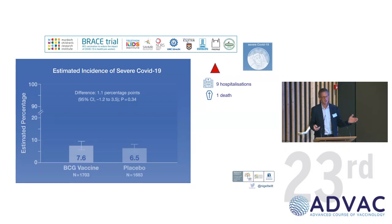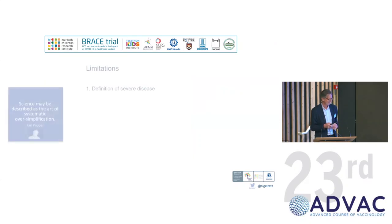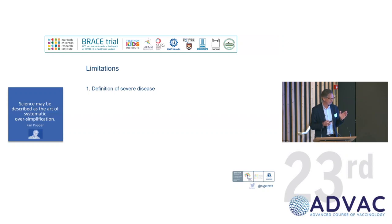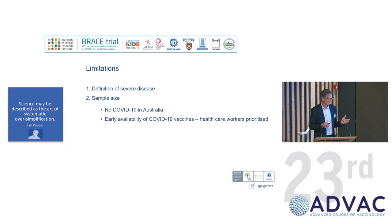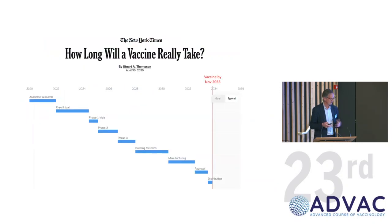So number one was the severe disease definition — very important to understand that. The second limitation is the problem with sample size. Unfortunately there was no COVID in Australia. And of course the vaccines came along so much quicker. The idea was to accelerate all phases and get a vaccine within 18 months by August 2021. But it was December 2020 when we gave the first vaccine — unbelievably fast and unbelievably effective. Not only did the vaccines come earlier, but healthcare workers — the very people we'd randomised — got them first. And so we had fewer participants and needed to stop recruiting. We needed 10,000 as our sample size.